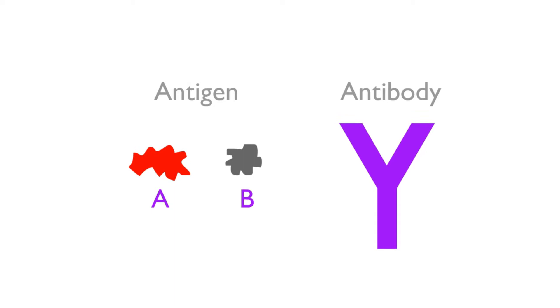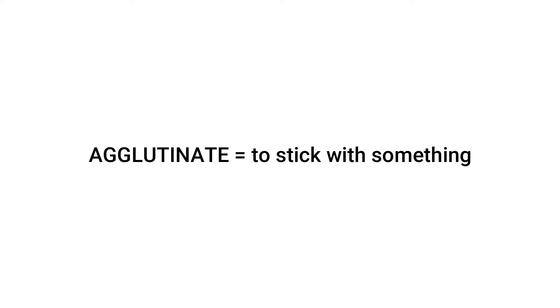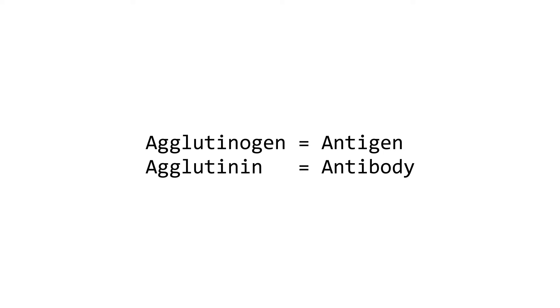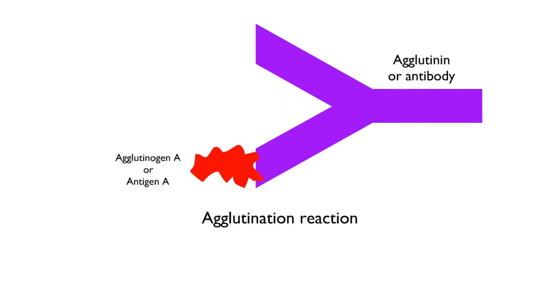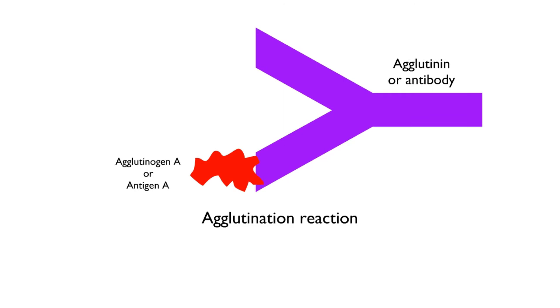The word agglutinate means to adhere or to stick with something. When we talk about blood grouping, we use the term agglutinogen instead of antigen, and agglutinin instead of antibody. When agglutinogen and agglutinin react with each other or stick to each other, we call it the agglutination reaction. This is important because the whole blood grouping system is dependent on it.